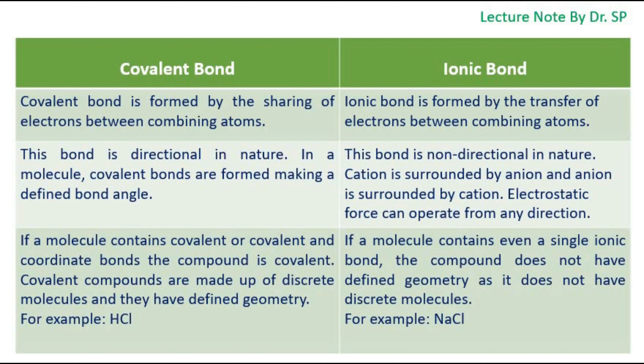Covalent bond is directional in nature. In a molecule, covalent bonds are formed making a defined bond angle. But ionic bond is non-directional in nature. Cation is surrounded by anion and anion is surrounded by cation in ionic bond. An ionic bond's electrostatic force can operate from any direction.